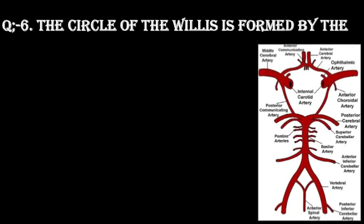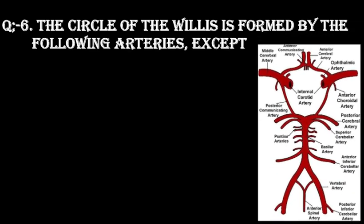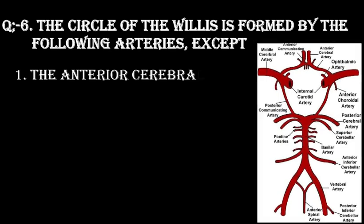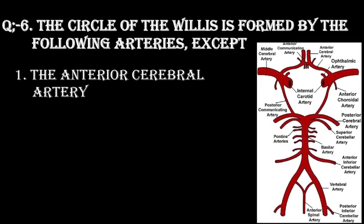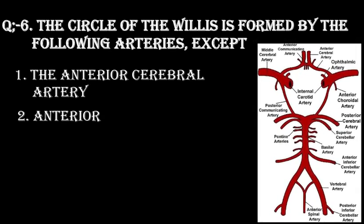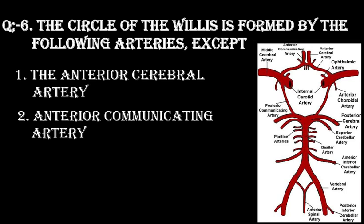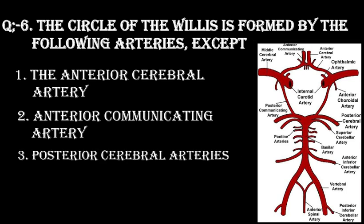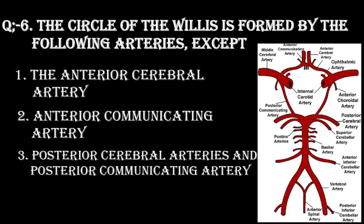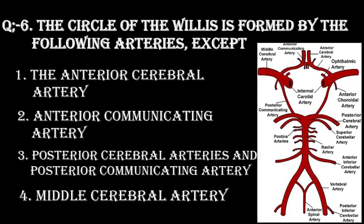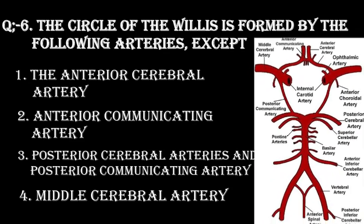Question number 6. The circle of Willis is formed by the following arteries, except. Option 1: Anterior cerebral artery. Option 2: Anterior communicating artery. Option 3: Posterior cerebral arteries. Option 4: Middle cerebral artery.